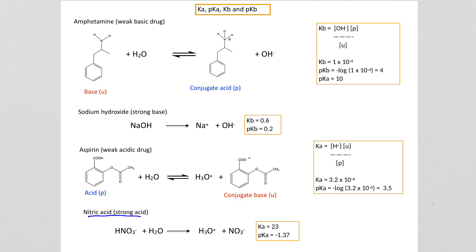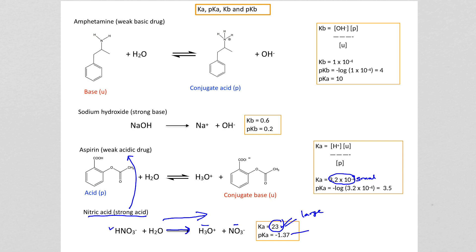Let's compare a strong acid with a weak acid. Nitric acid is a strong acid; its KA is a very big number, 23, compared to 3×10⁻⁴ for aspirin. The larger the KA, the more the acid breaks down into products. The pKA of nitric acid, if you calculate minus log of 23, comes out to be −1.37. So the smaller the KA, the larger the pKA; the larger the KA, the smaller the pKA, because pKA is the minus log of that number.